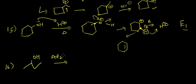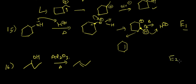In the final example, the compound reacts with Al₂O₃ and heat. The product is an alkene. This is an E2 reaction — there is no solvolysis, and OH and H are removed from the compound to form the alkene. With this, we conclude the lecture; the next lecture will cover more examples.